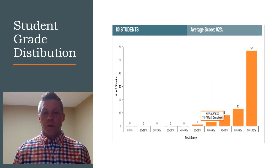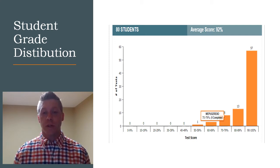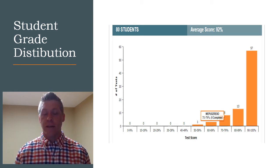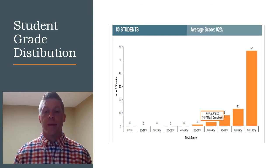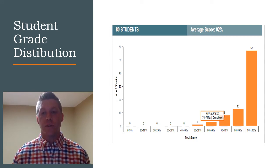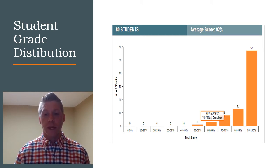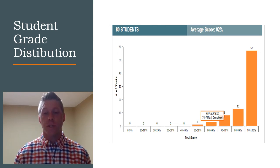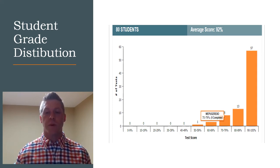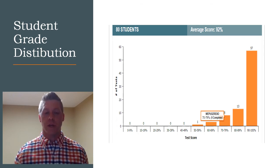Looking at the breakdown of scores by student numbers, 57 students did exceptionally well on this test making an A, which is a difficult task given the challenging material. 13 students made a B. So out of 80 students, 70 made an A or B — that is awesome. But there are still students that made C's, and four students failed the assessment. You really want to make sure to address the needs of students that didn't fully grasp all of the material.